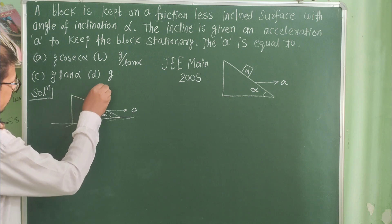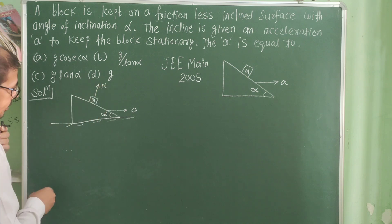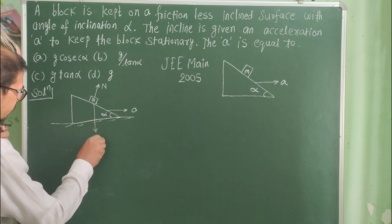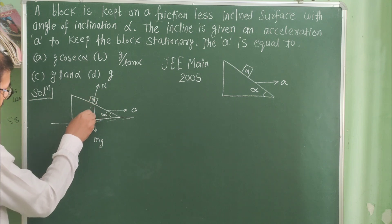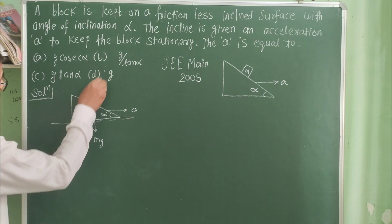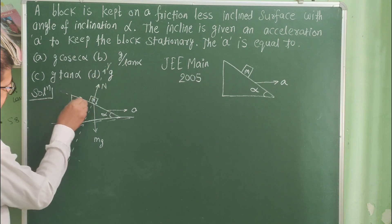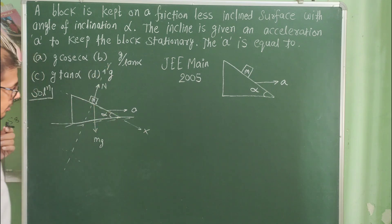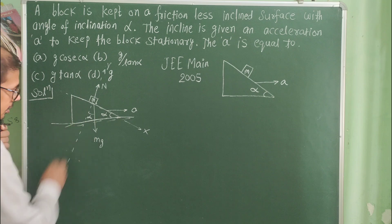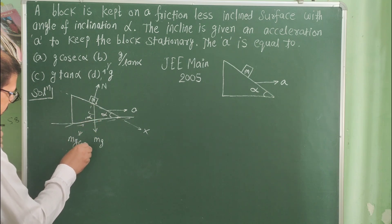First, write all the forces on the block. This is the mg force. This is the y-axis and this is the x-axis. This is alpha, so this is also alpha. This is mg, so mg cos alpha.